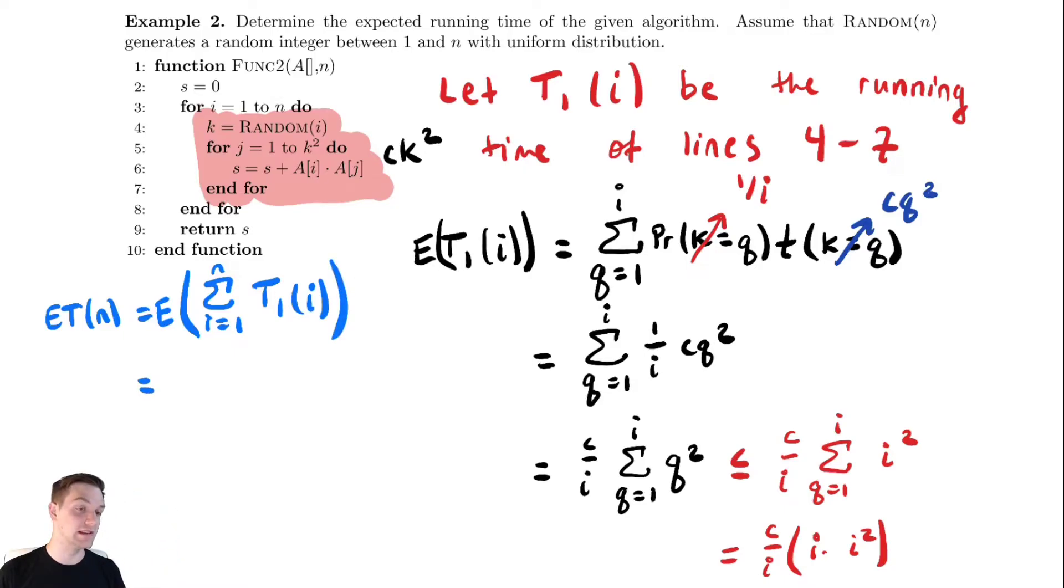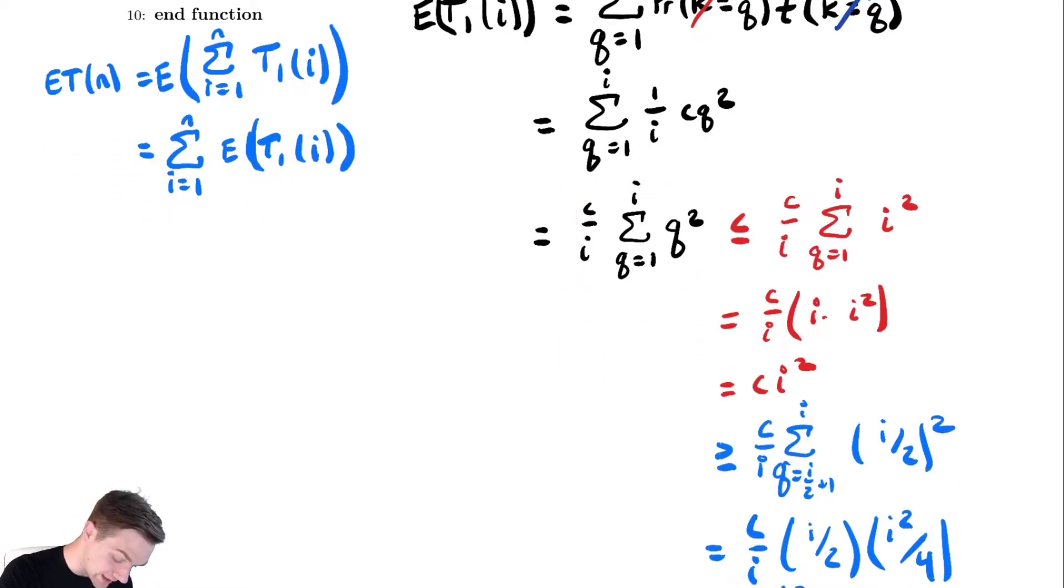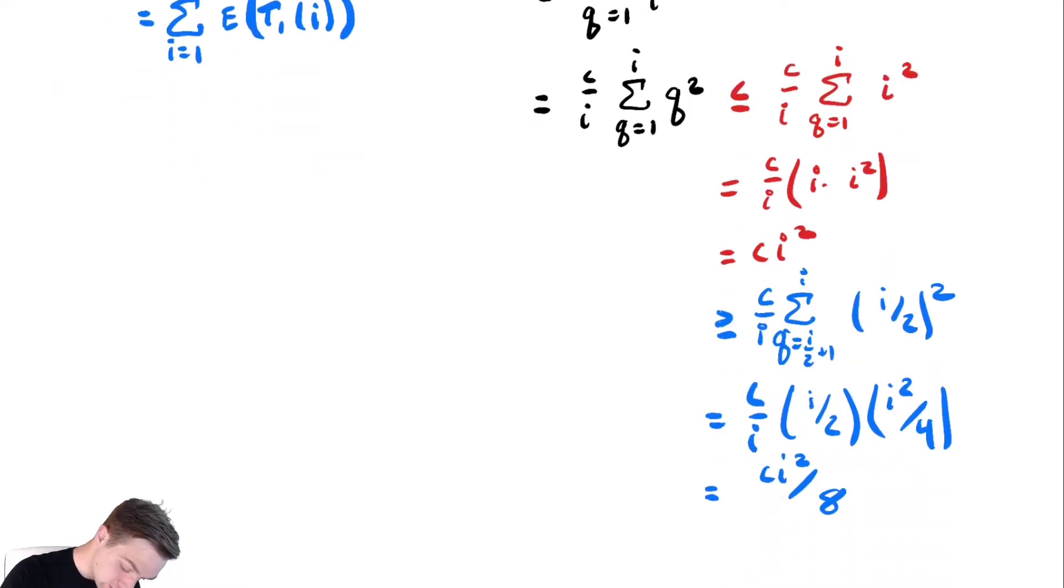I can now, because expectation is a linear operator, I can switch the order of the summation and the expectation value. Write this as the sum from i equals 1 to n of the expected value of T1(i). And I know what the expected value of T1(i) is. I could plug that in. But I also know from all the bounding I did that the expected value of T1(i) is less than or equal to ci² and greater than or equal to ci² over 8.